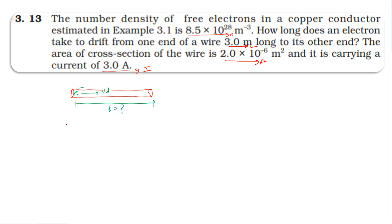Current is equal to n A e v_d. The velocity is equal to distance traveled by time taken, so time taken equals distance traveled by velocity. The velocity here is the drift velocity, which we need to find.